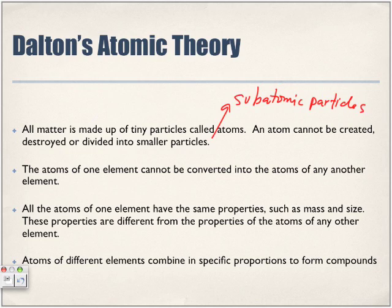All atoms of one element have the same properties, such as mass and size, and these properties differ from those of any other element. Looking at the periodic table, notice how the mass number is different from element to element — none of them share the same mass number.